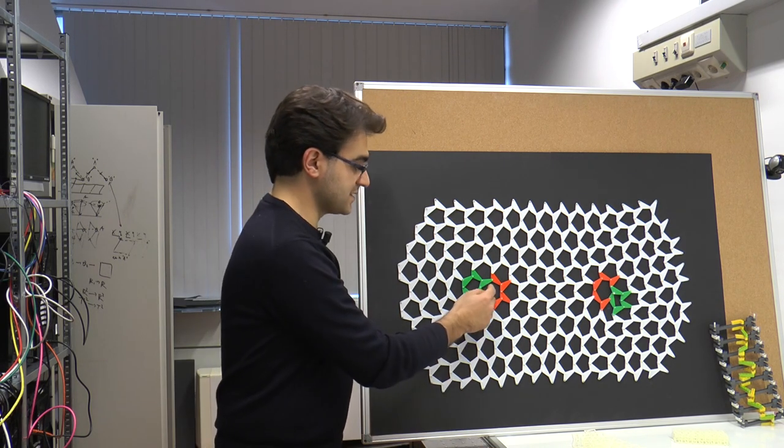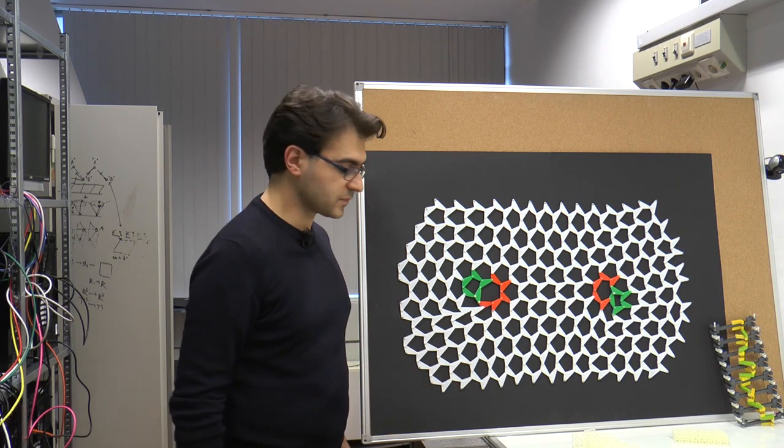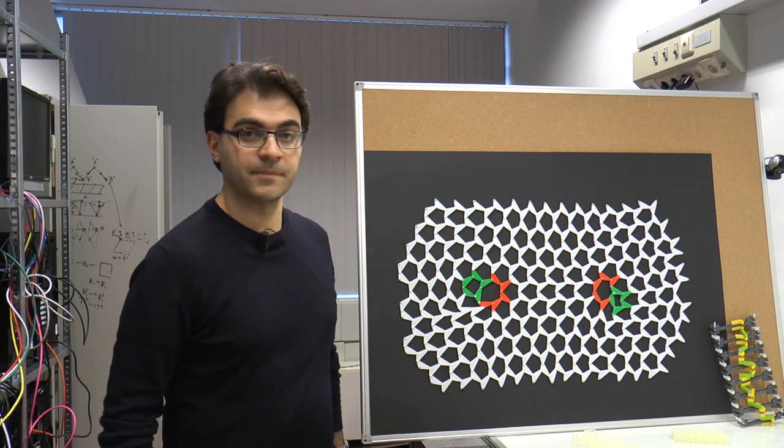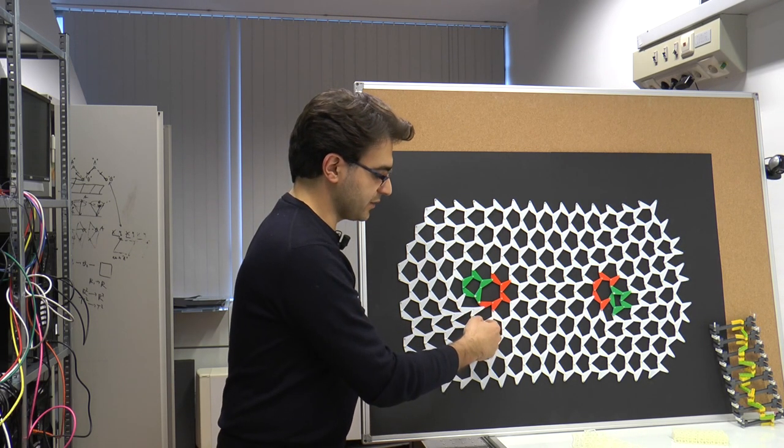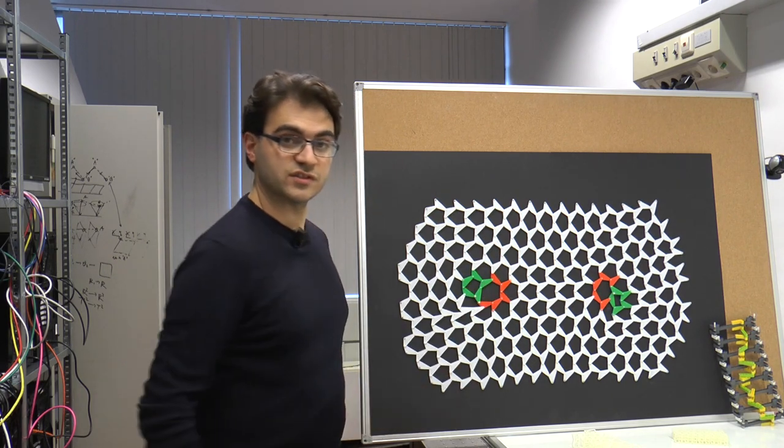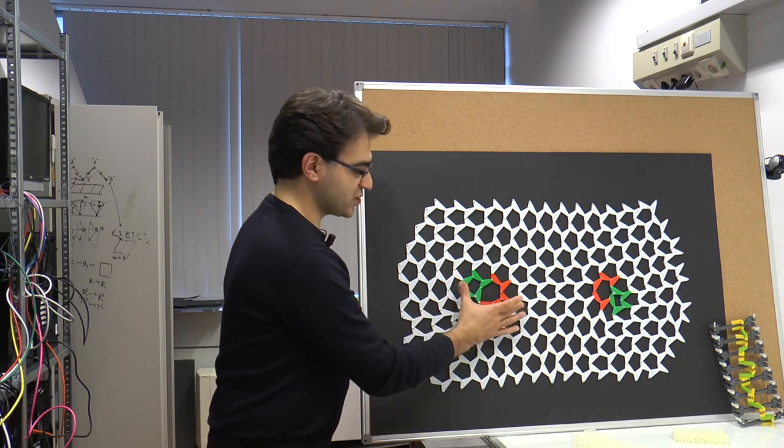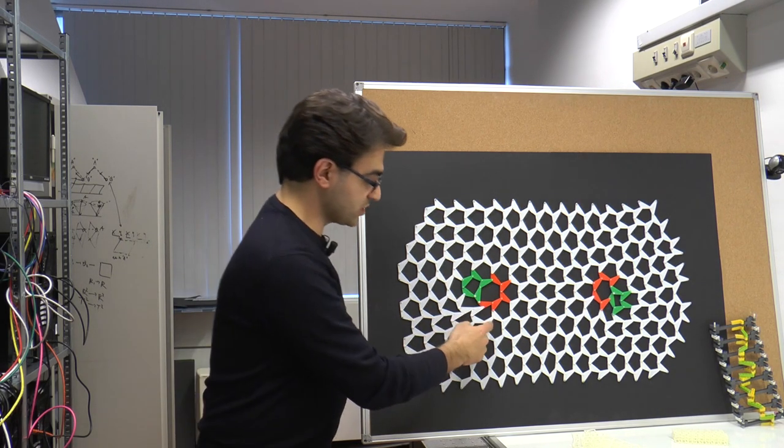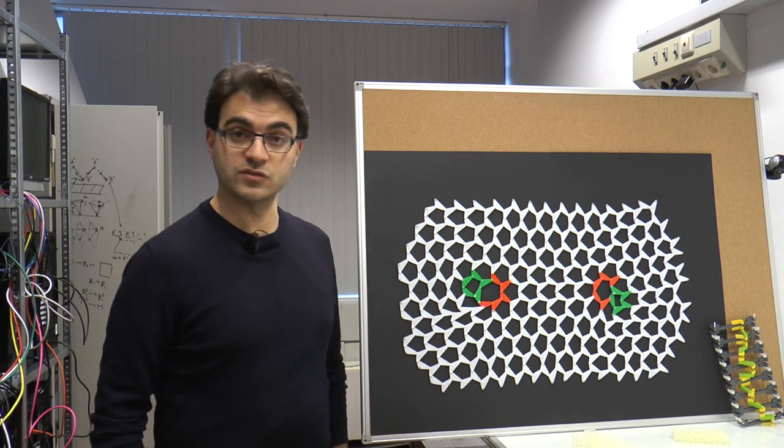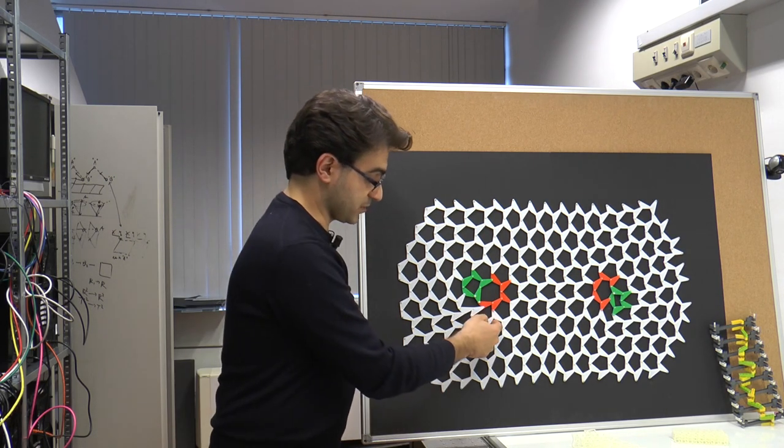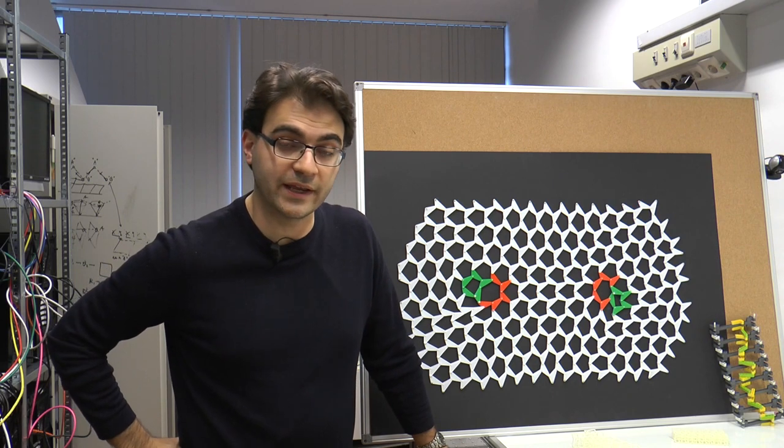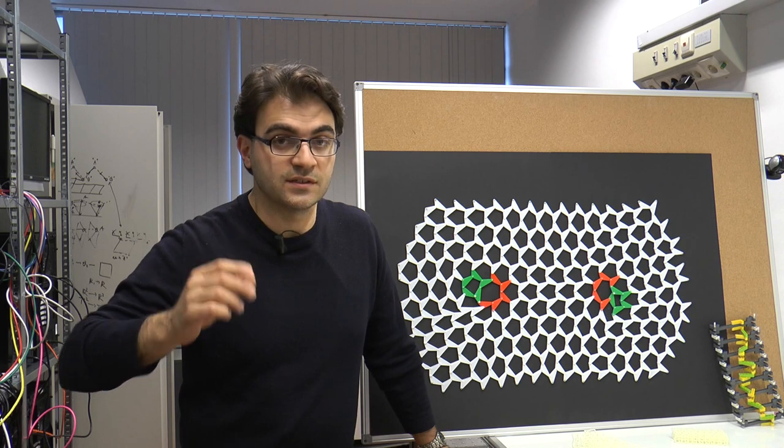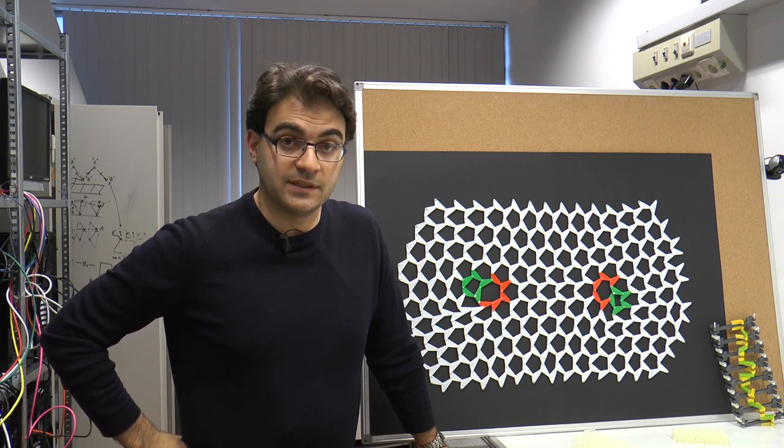For example, the fact that this dislocation can support a zero energy motion at its center is something that does not depend on the detail of the shape of the triangles of which the structure is made of. However, the spatial extent of the localized motion that is present here can be tuned by changing the geometry of this unit cell or more specifically, in this case, the geometry of the triangle because that increases or reduces the acoustic gap that exists in the structure.